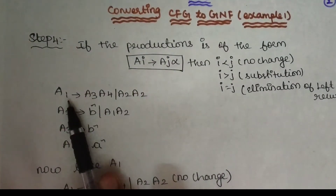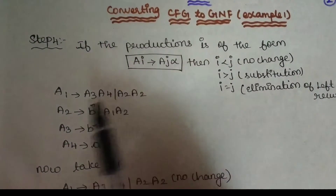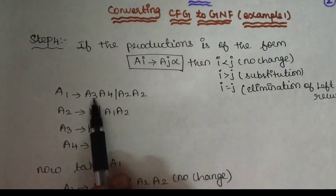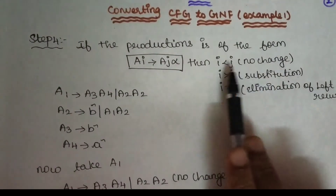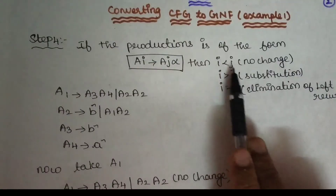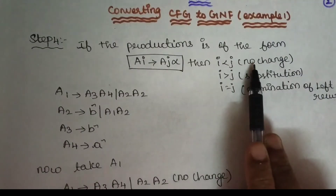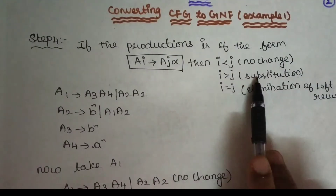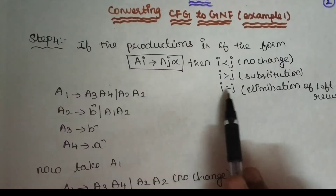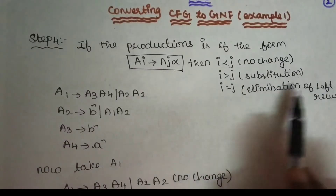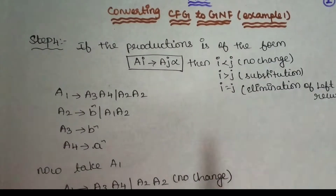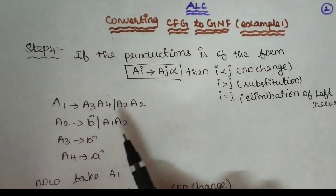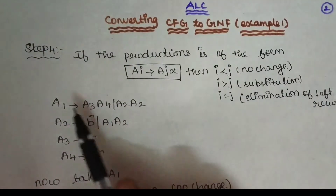Check the i value and j value. The i value is here and the j value is here. Let me check: i less than j means no change; i greater than j means substitution rule; i equal to j means left recursion — that means eliminate. In this case, we apply all the productions.